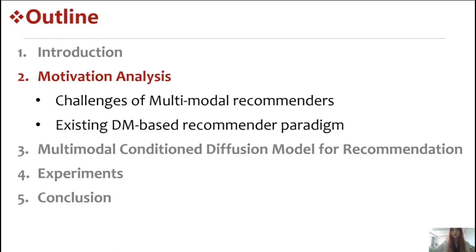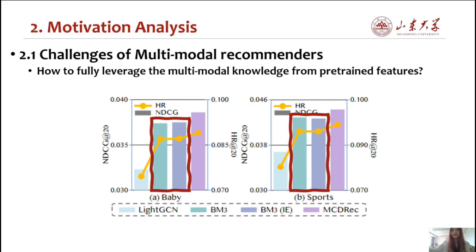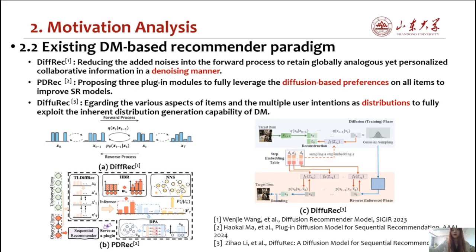The second section is Motivation Analysis. To investigate whether existing multimodal recommenders fully leverage the multimodal knowledge, we conduct experiments to verify this by leveraging the pre-trained item embeddings from LightGCN to replace the multimodal representation in BM3. As shown in the figure, we notice that BM3 without multimodal knowledge yields comparable performance with the original BM3. We believe that the multimodal information embedded in BM3 remains underutilized, so we began to explore incorporating uncertainty injection and multimodal guidance of diffusion models.